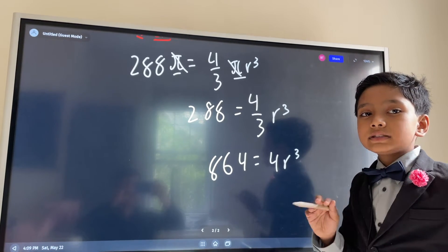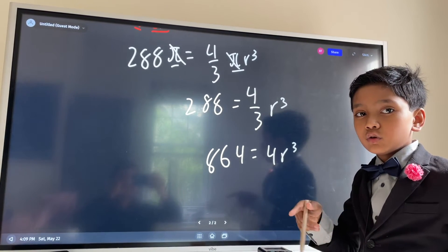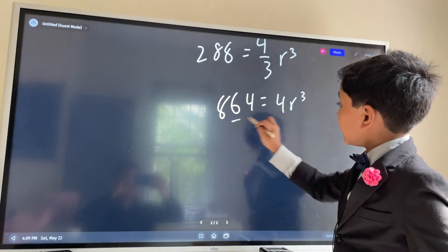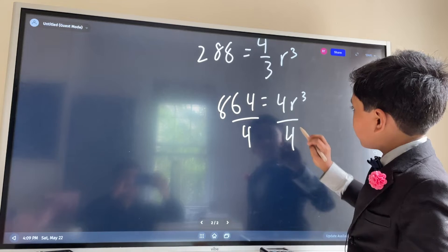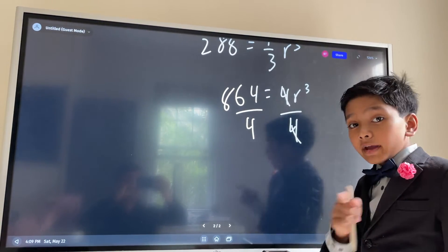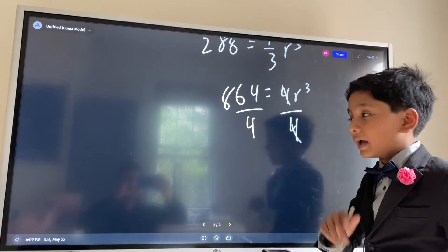Well, let's see the answer in 3, 2, 1. Alright, here's the answer. We do divide by 4. If we cancel out, then we get 864 over 4. Quick, do that problem before I solve it.